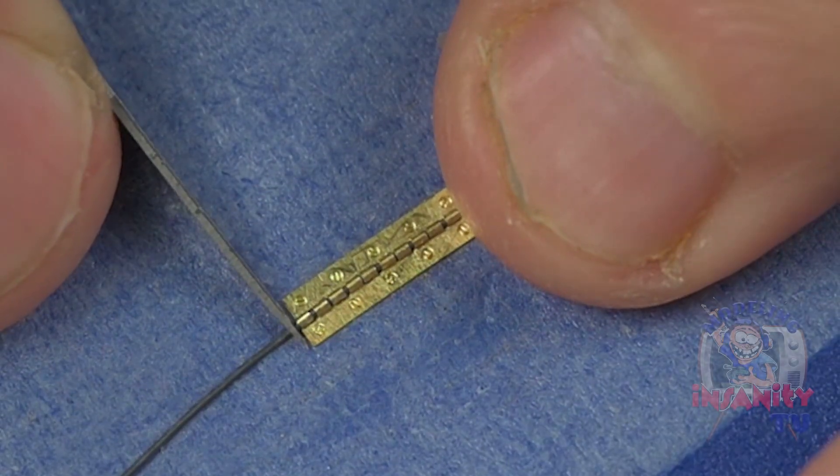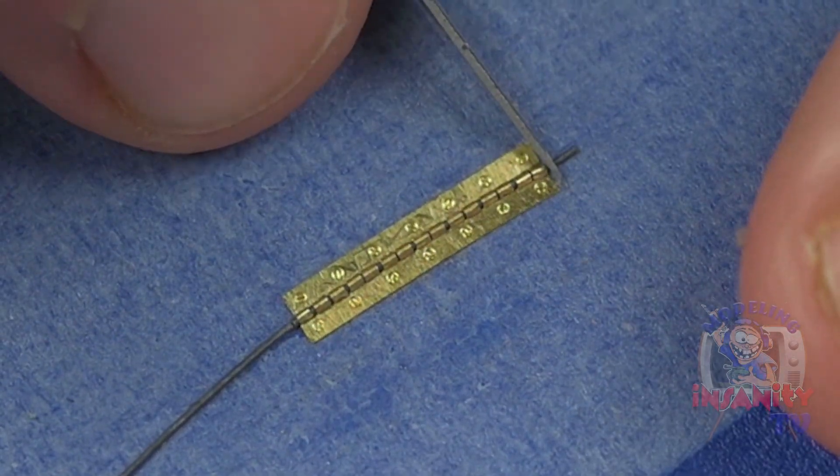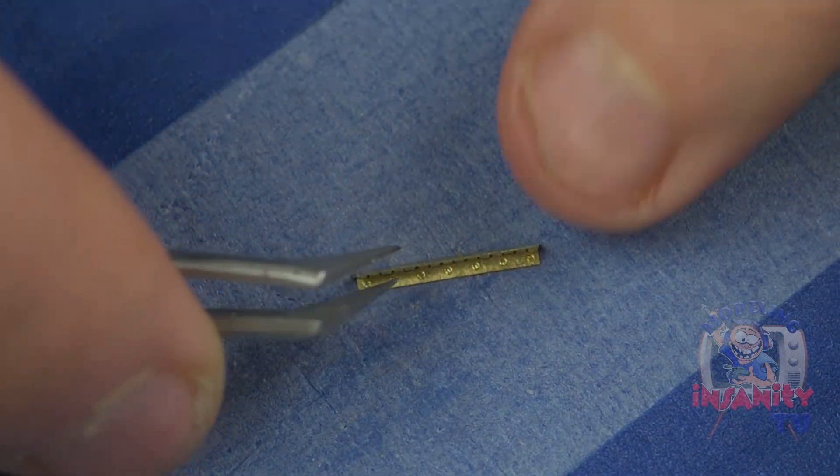Then cut the wire, and just like that we have another workable hinge.